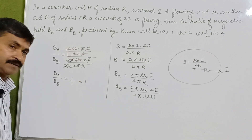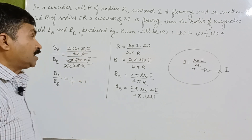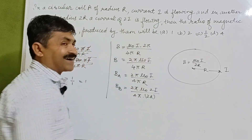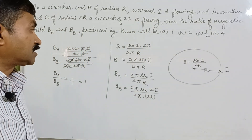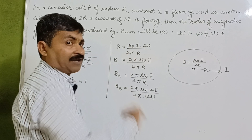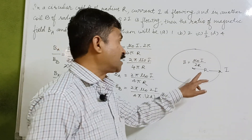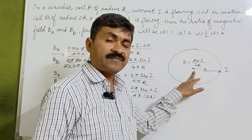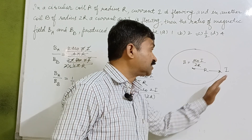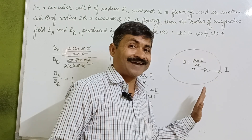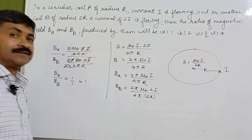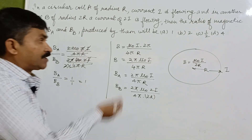The answer is 1, so option A is the correct answer. It is a simple problem if we know the magnetic field at the center of a circular coil carrying a current i. With that formula, we can easily determine the ratio.